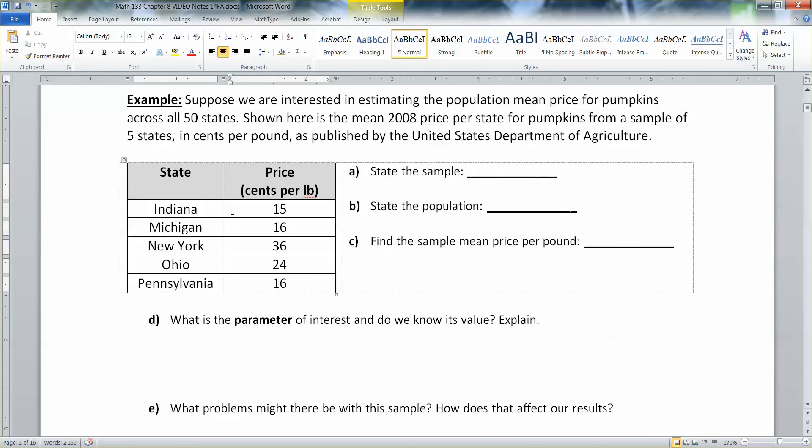Now the first question they ask us is what is the sample? State the sample. Well, the sample would be these five states. So the five states chosen, that's the sample. The population would be all 50 states. I wonder what the price of pumpkins is in Hawaii. I don't think they grow pumpkins in Hawaii. Probably be pretty high.